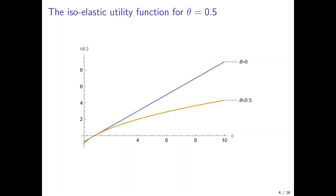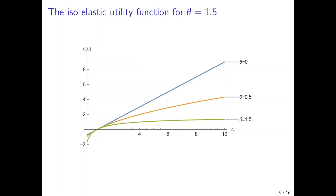Now I include the utility function for the case of theta equal to 0.5. These are now already risk-averse individuals, and we see the function becomes more concave — the curvature becomes more pronounced. It starts at a lower level, even more negative than the linear function for a low consumption level, and it does not increase as much. The more you increase theta, the more risk-averse households become and the more pronounced is the curvature of the utility function.